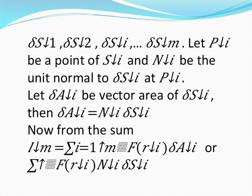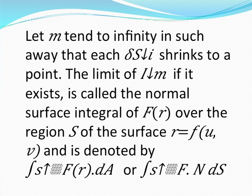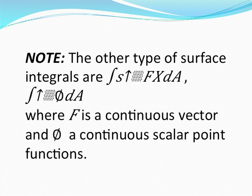Let delta a-i be the vector area of delta s-i, then delta a-i equals n-i times delta s-i. Consider the sum: summation from i equals 1 to m of f(u-i) n-i times delta s-i. As m tends to infinity such that each delta s-i shrinks to a point, the limit if it exists is called the normal surface integral of f(r) over region s, denoted by the integral over s of f(r) dA or the integral over s of f·n ds. Other types of surface integrals are the integral over s of f cross dA, or the integral over s of phi dA, where phi is a continuous scalar point function.